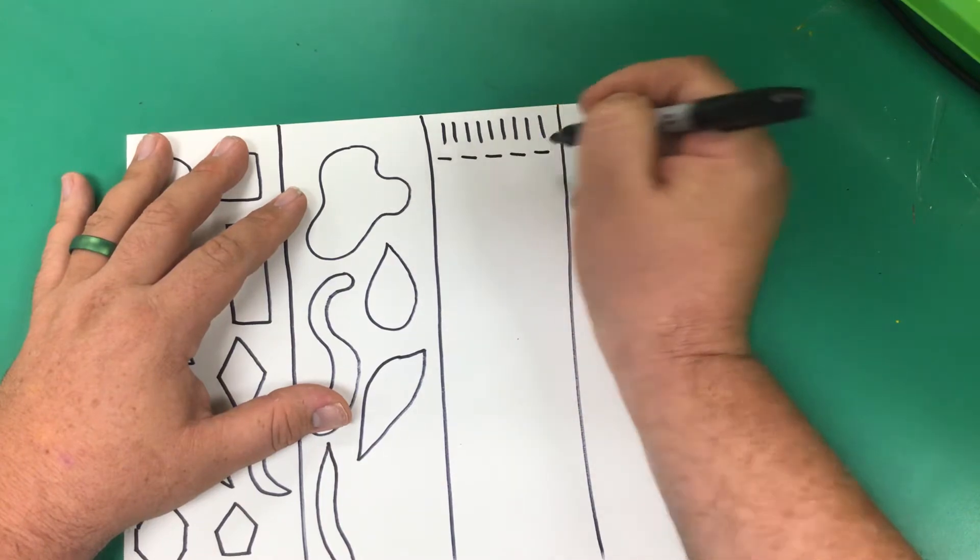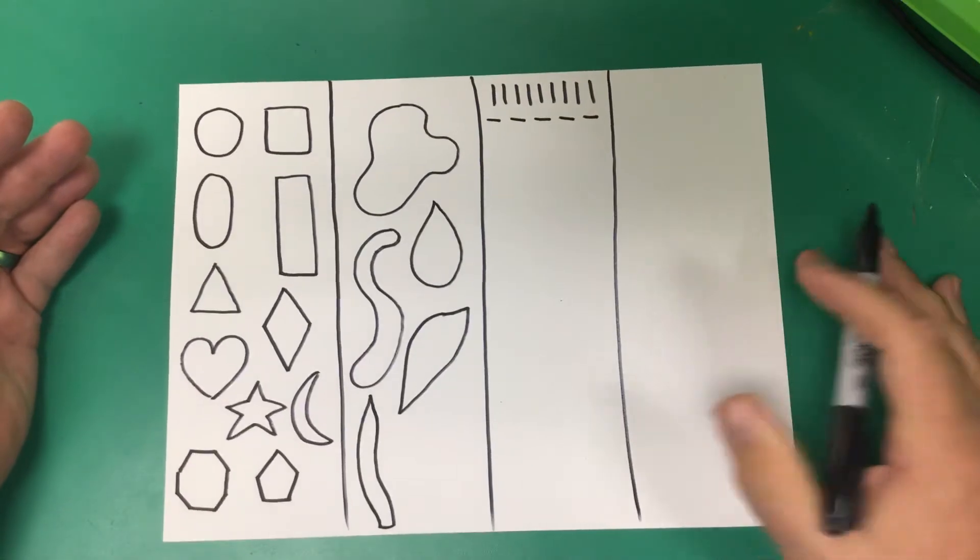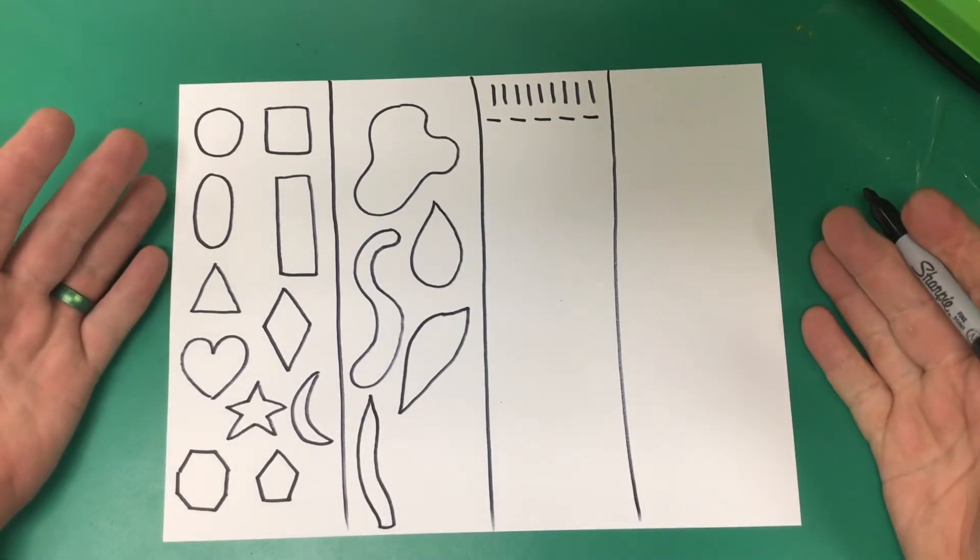Next we do horizontal lines. They kind of look like dashed lines. If I ask you to have your paper horizontal it looks like this, side to side.